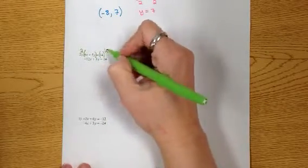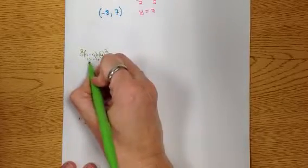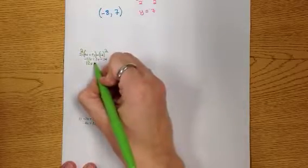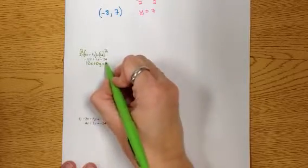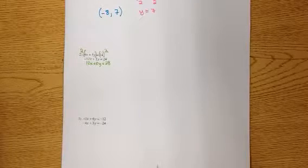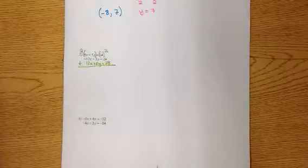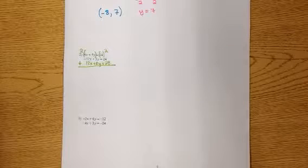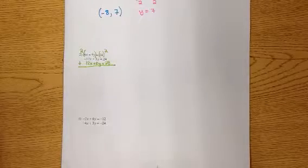I go ahead and multiply this by 2. I have to make sure that I do it on both sides of the equal sign, because the multiplication property of equality says I need to multiply on both sides. You may ask: do I always have to do something to the first equation? No — it just happens that with these two examples we are doing it to the first equation.